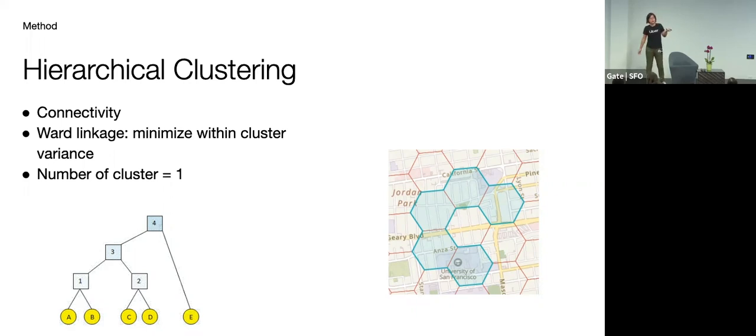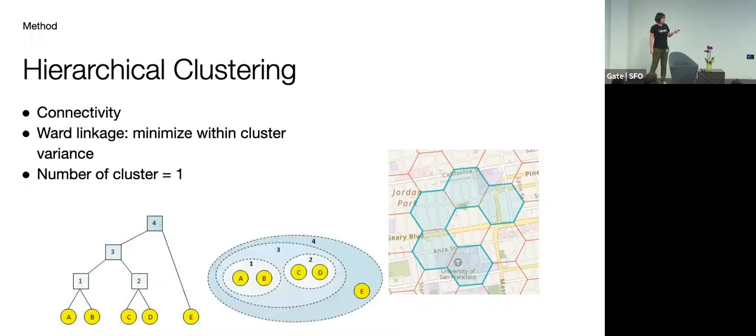And then so on and so forth until we reach the state that we only ended up with one big hex cluster that has all the hexagons. So now how do we decide where to cut? Because ultimately we want a segmentation. We don't want like a big city ID that goes from all the way north to all the way south. So we can cut at different levels for the desired granularity.